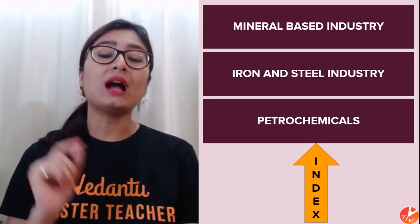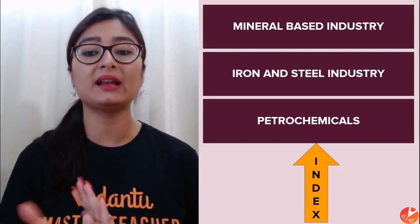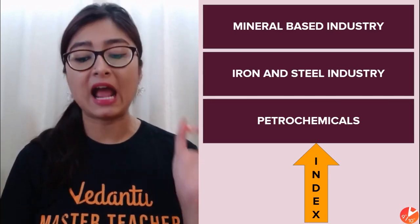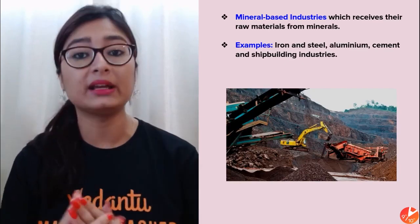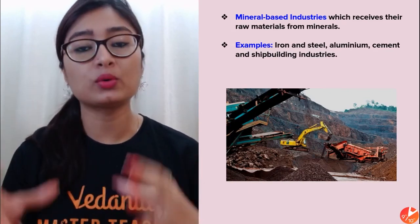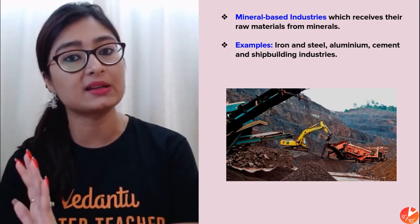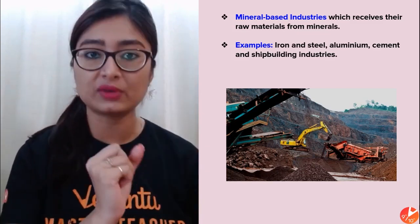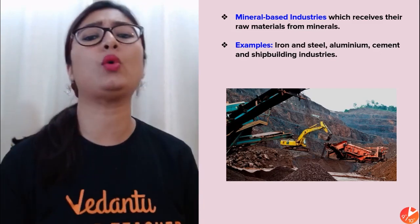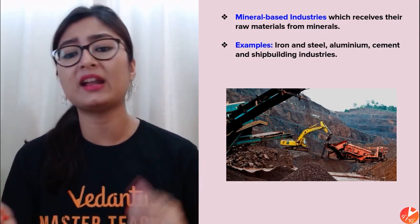Today we are going to start our second part of manufacturing industries, which is mineral-based industries. We will discuss the iron and steel industry, followed by the petrochemicals industry, and of course at the end we will have a very important homework question. Industries are based on raw materials — divided into agro-based industry and mineral-based industry. Mineral-based industry uses raw materials like iron and steel, aluminium, cement, and shipbuilding industries.